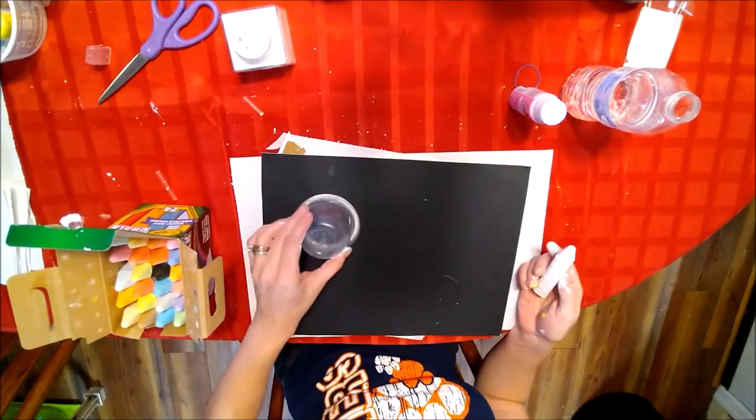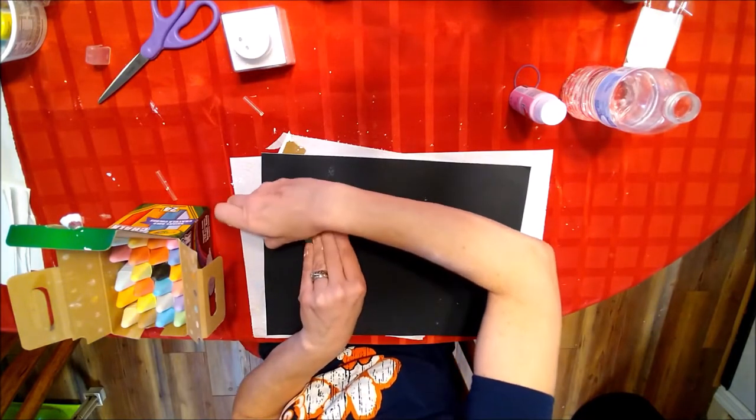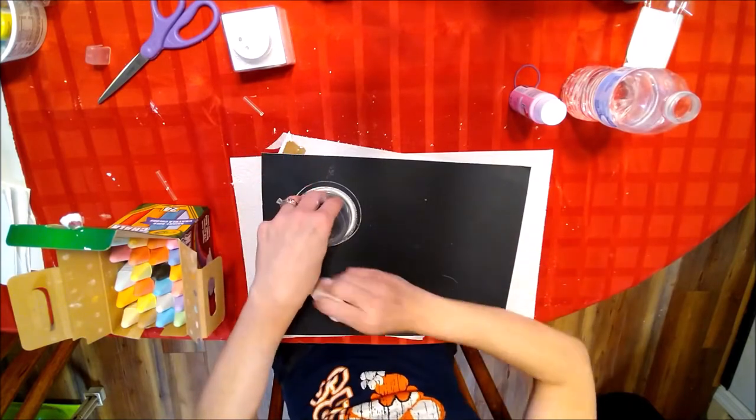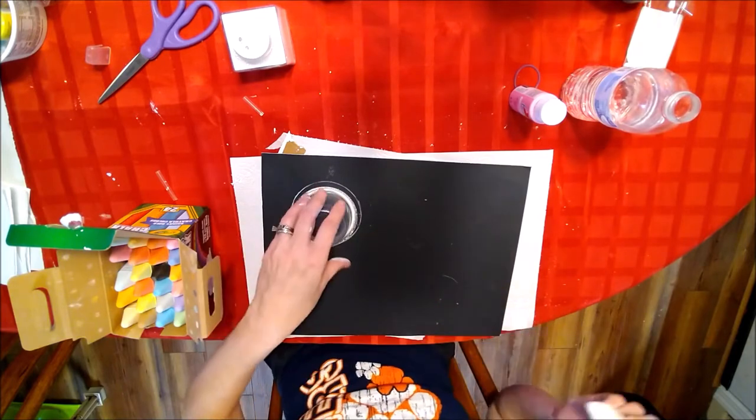So I'm gonna just take a little Tupperware bowl. You can use a bottle top or a cap, anything you like, and I'm just gonna draw some circles. Today I'm gonna make them all the same size but you can make them big or small.